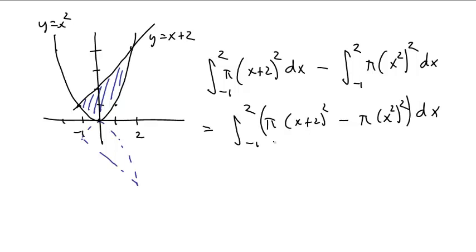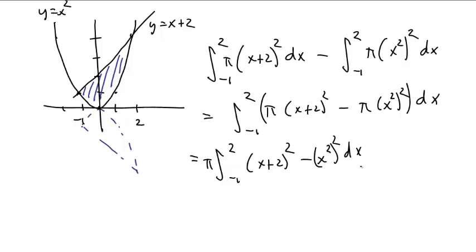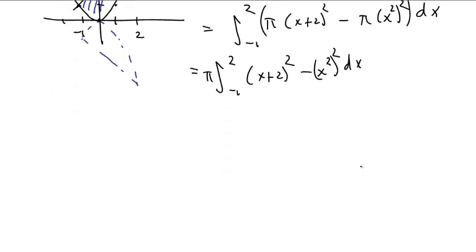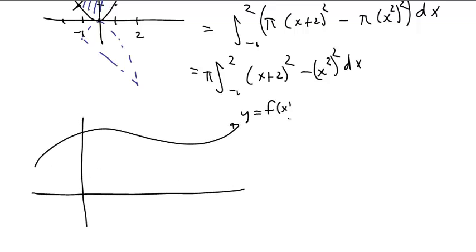Yes, I could simplify it, but what I want to point out—and you can pull the π out front—negative one to two, put the π out front, x plus two squared minus x squared squared dx. What I want you to realize is that you can just calculate this out. If you had something like the integral y equals f of x, and you had the curve, and you had another curve, y equals g of x, and you wanted to rotate the area between them.